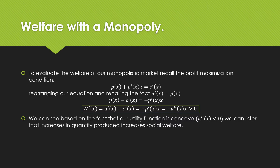this is the same thing as taking the derivative of our welfare function with respect to X, and we see that the effect is going to be positive. This is because our utility function is concave, meaning that the second derivative will be negative. And we can infer that an increase in quantity from this property produces an increase in social welfare.